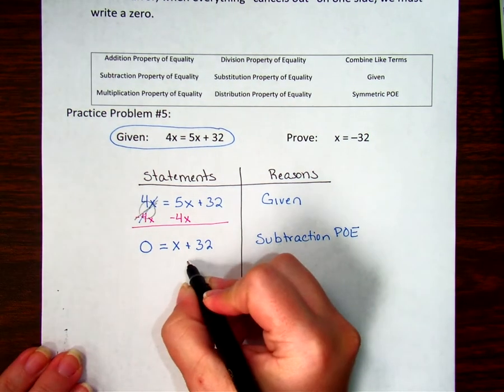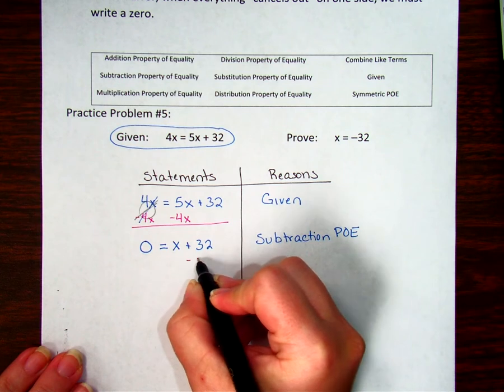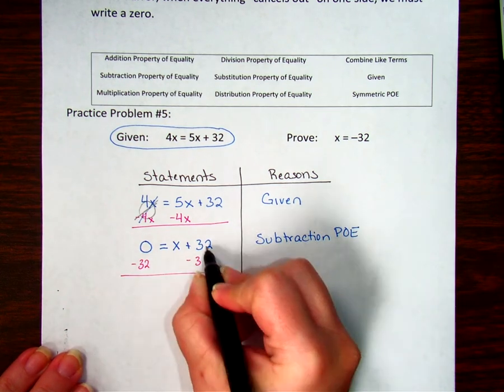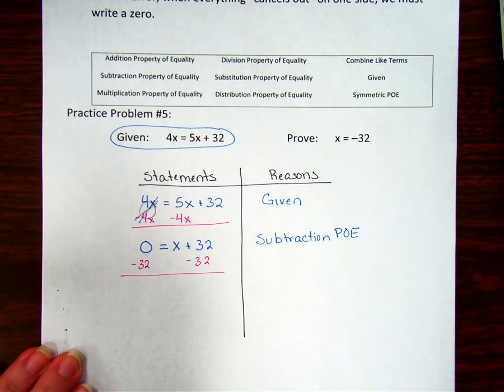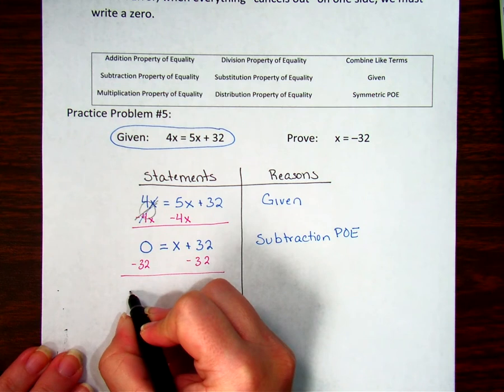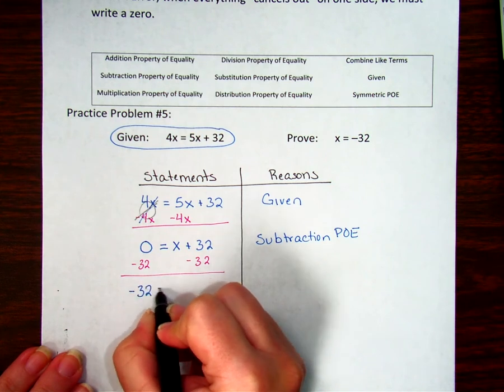Alright, so then moving on, I want to get this X by itself, so I'm going to subtract 32 from both sides to move the 32 over. And when I do that, I get 0 minus 32 is negative 32, equals X.